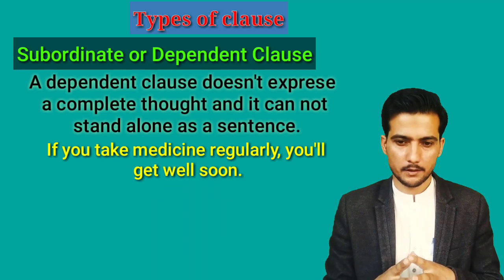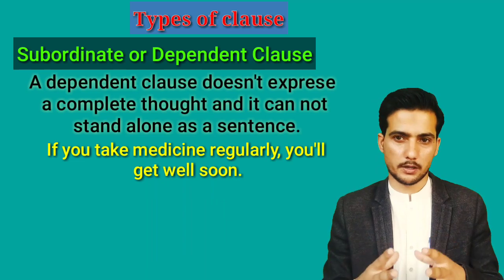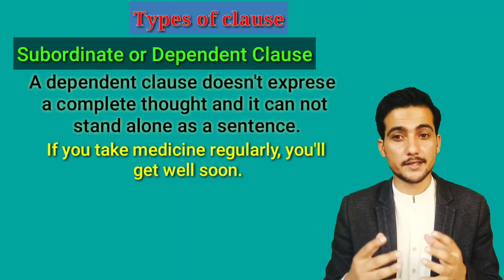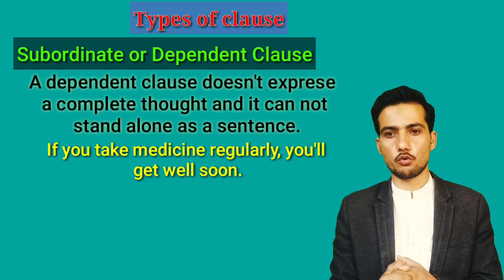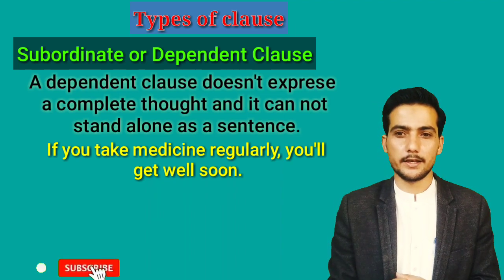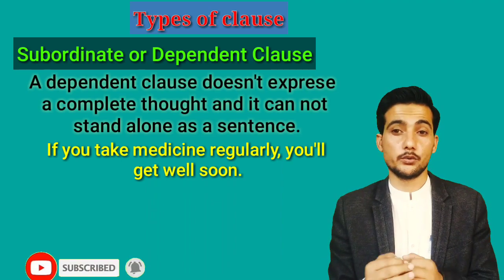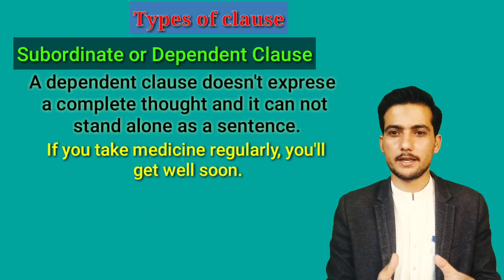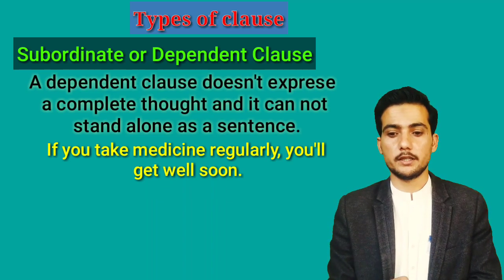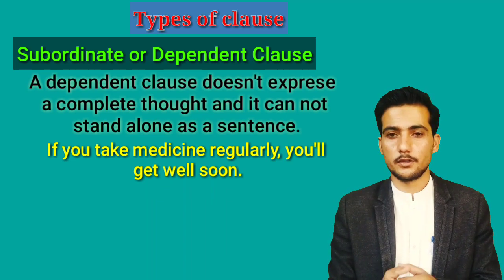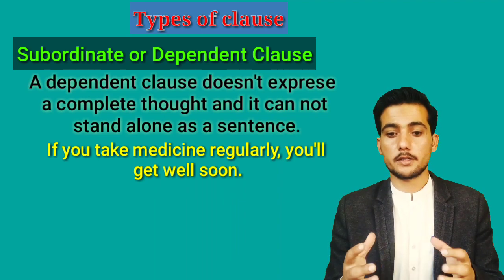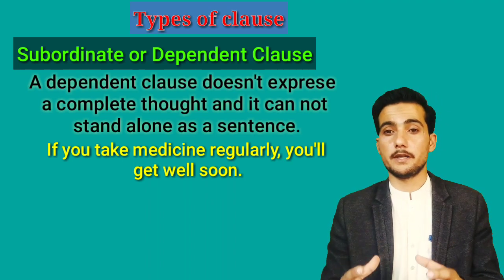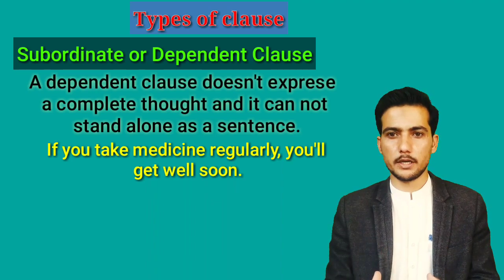For example: 'If you take medicine regularly, you will get well soon.' This sentence consists of two clauses. 'If you take medicine regularly' is the subordinate or dependent clause because it cannot stand alone. If you say only 'if you take medicine regularly,' your friend will be confused because it cannot give complete sense. But when you add 'you will get well soon,' then it gives complete sense.